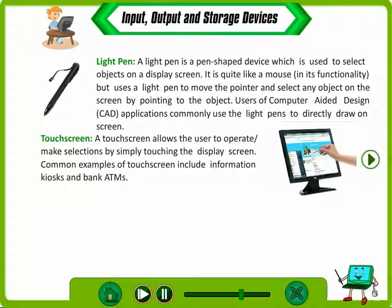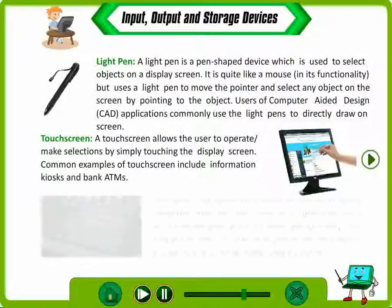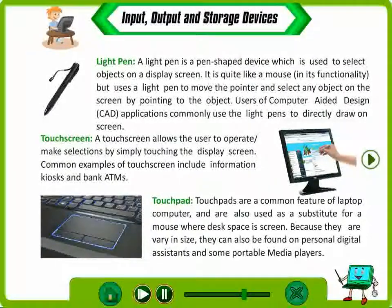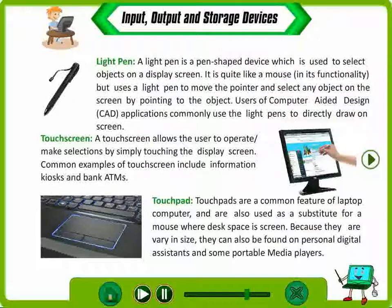A touch screen allows the user to operate or make selections by simply touching the display screen. Common examples of touch screens include information kiosks and bank ATMs. Touchpads are a common feature of laptop computers and are also used as a substitute for a mouse where desk space is limited. Because they are very small in size, they can also be found in personal digital assistants and some portable media players.